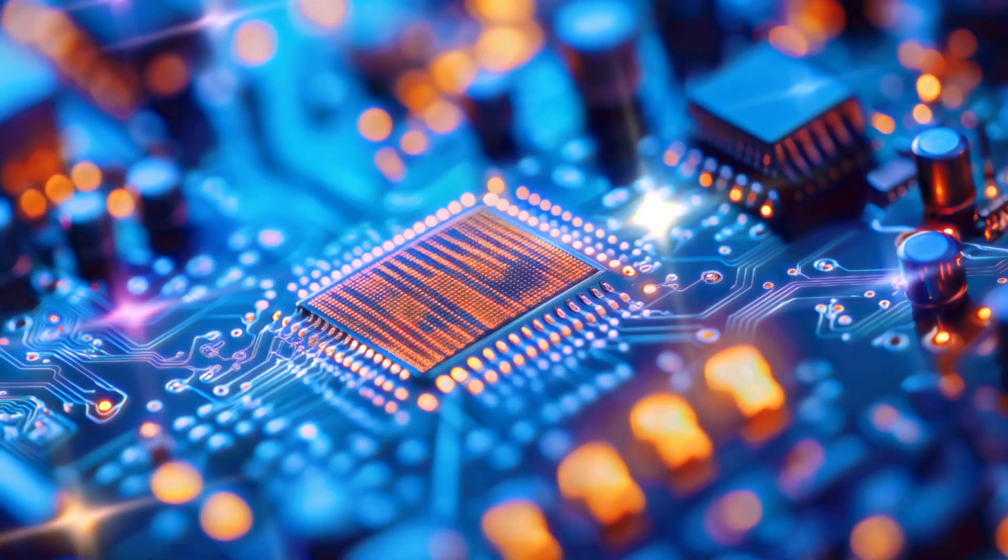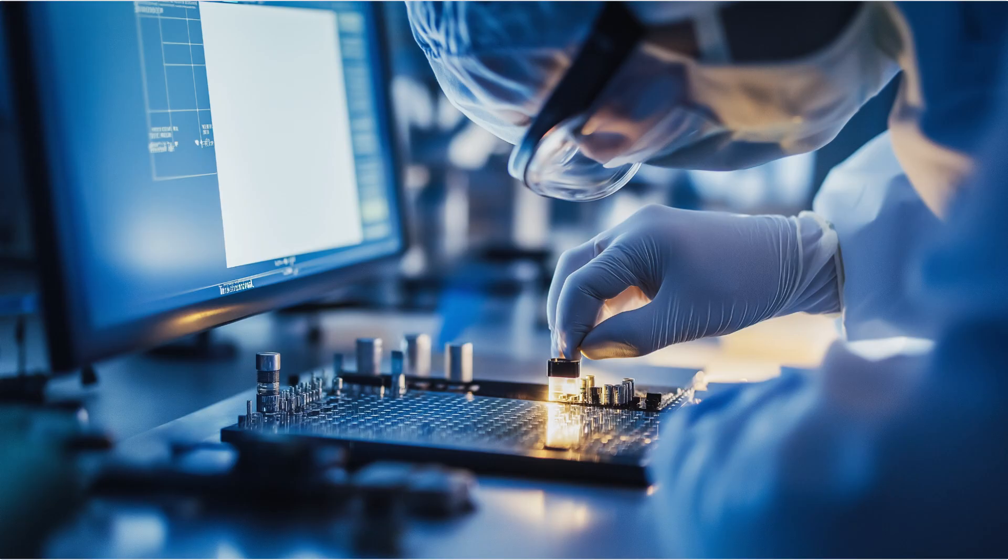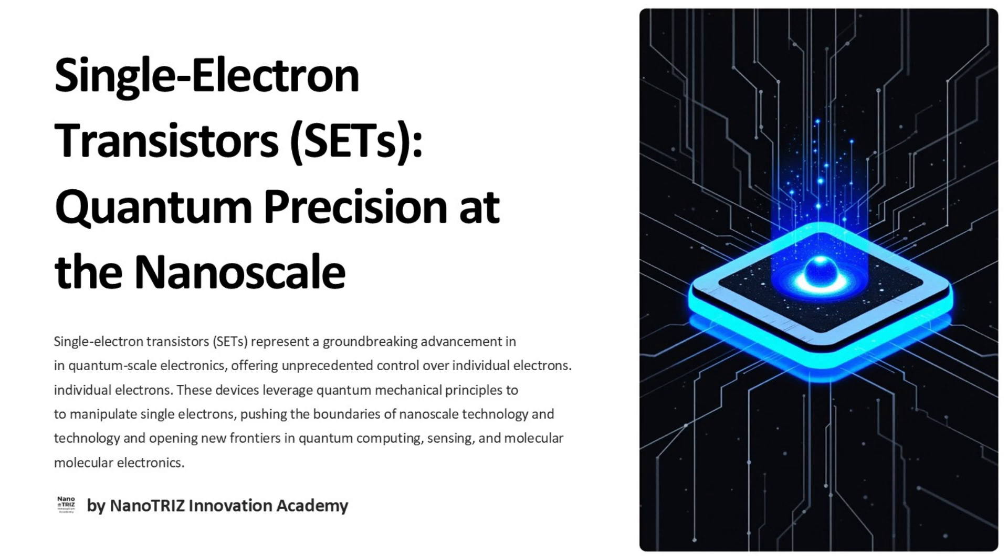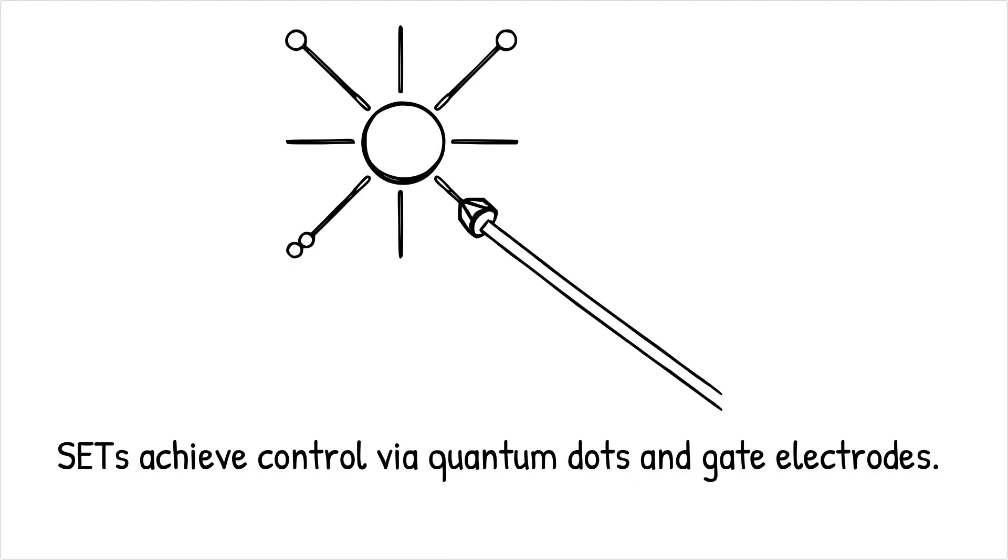This control is achieved through a confinement region, often a quantum dot, where electrons can reside, and a gate electrode that controls their movement via applied voltage.